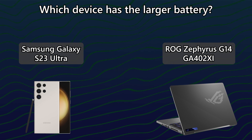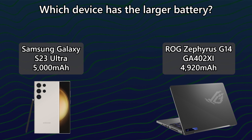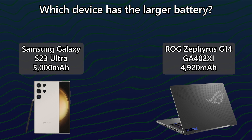Here's the answer. If we just look at the mAh value, this laptop has 4,920 mAh but this phone has a 5,000 mAh battery. So if I put this phone's battery into the laptop, it should last a tad bit longer, right? Well, that doesn't make sense — the laptop's battery is physically much larger than the phone itself.